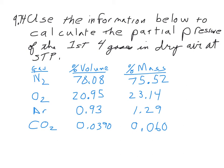All right, 9.74. Use the information below to calculate the partial pressure of the first four gases in dry air at STP. And they give you the percent volume and percent mass.